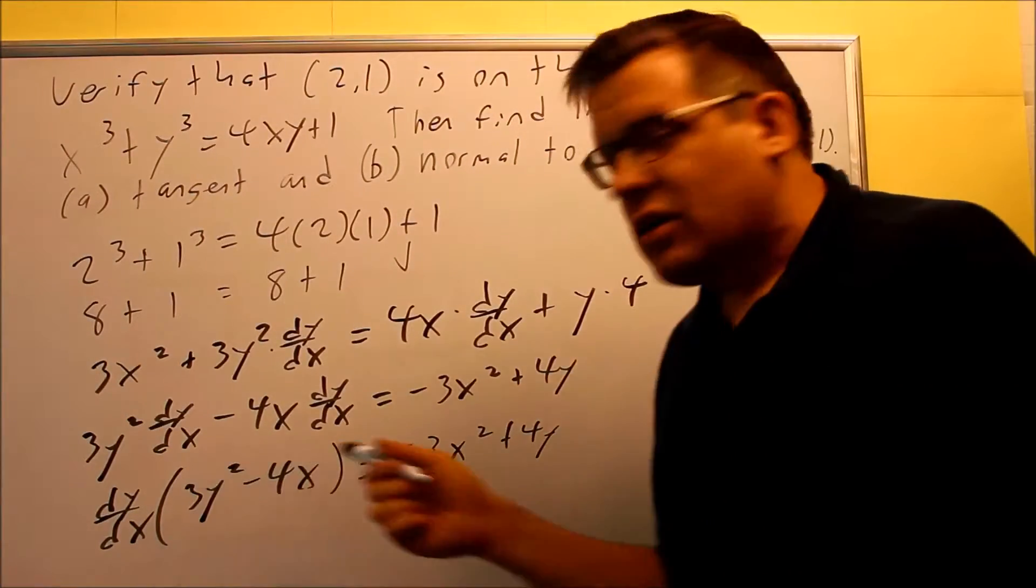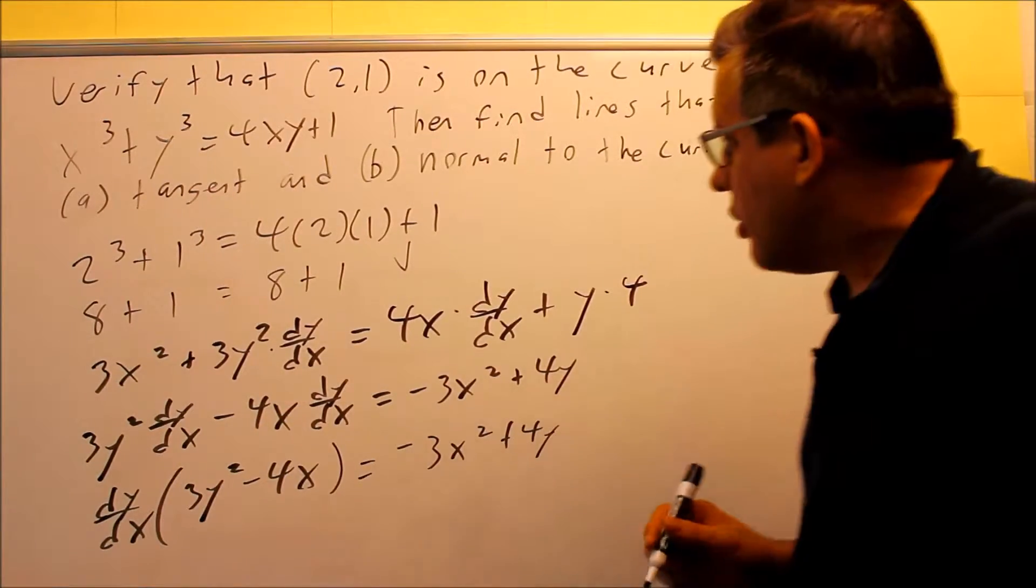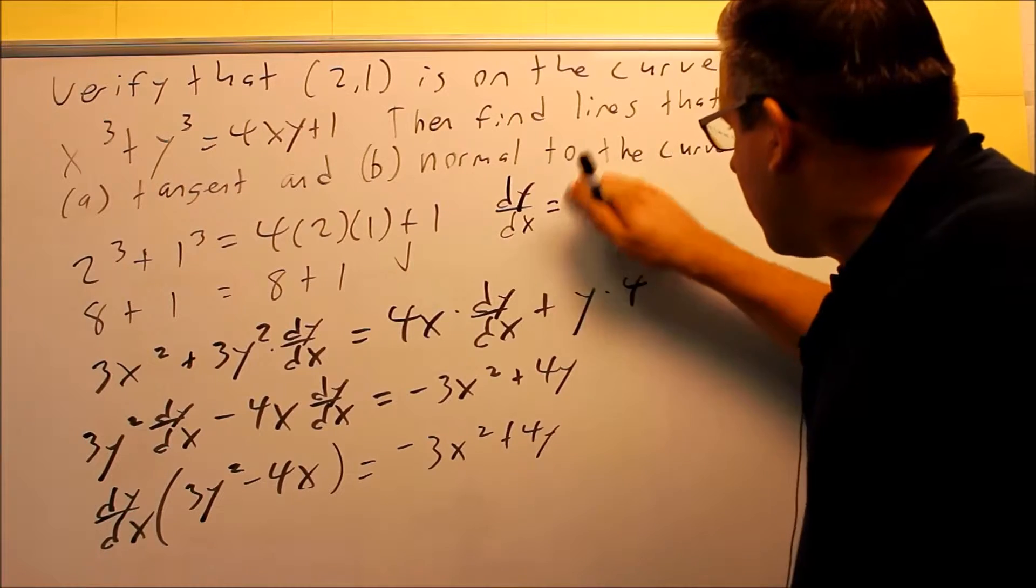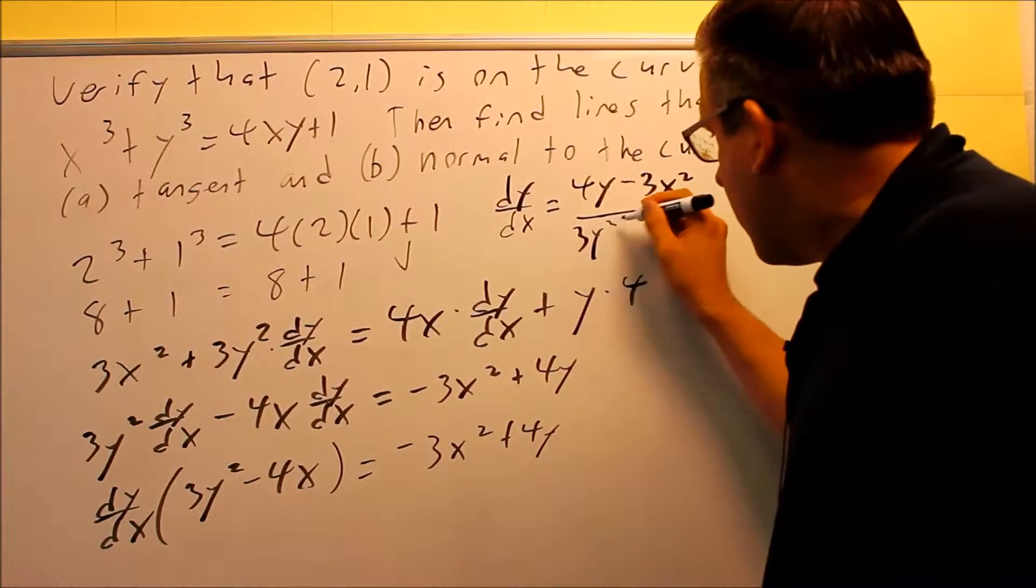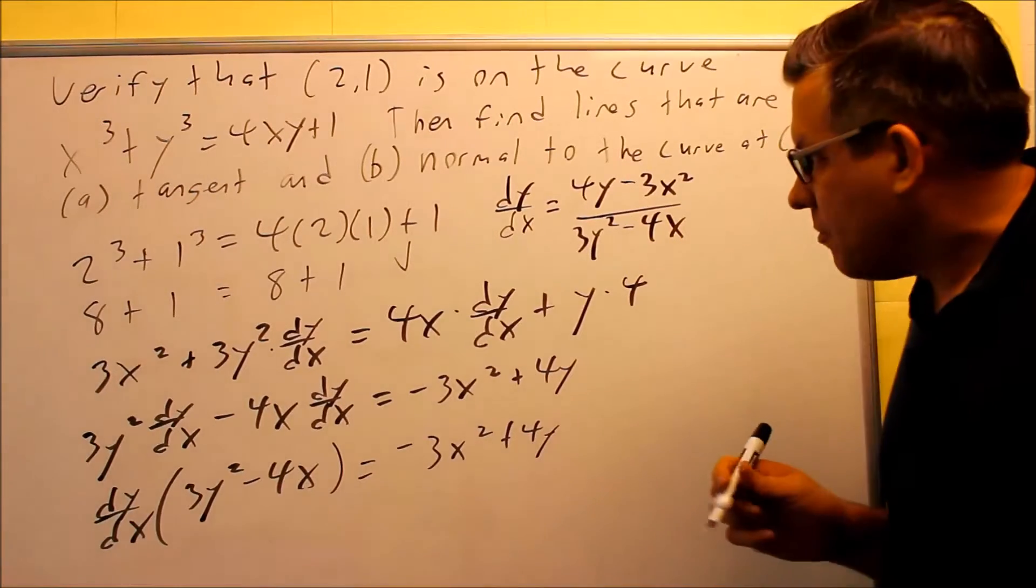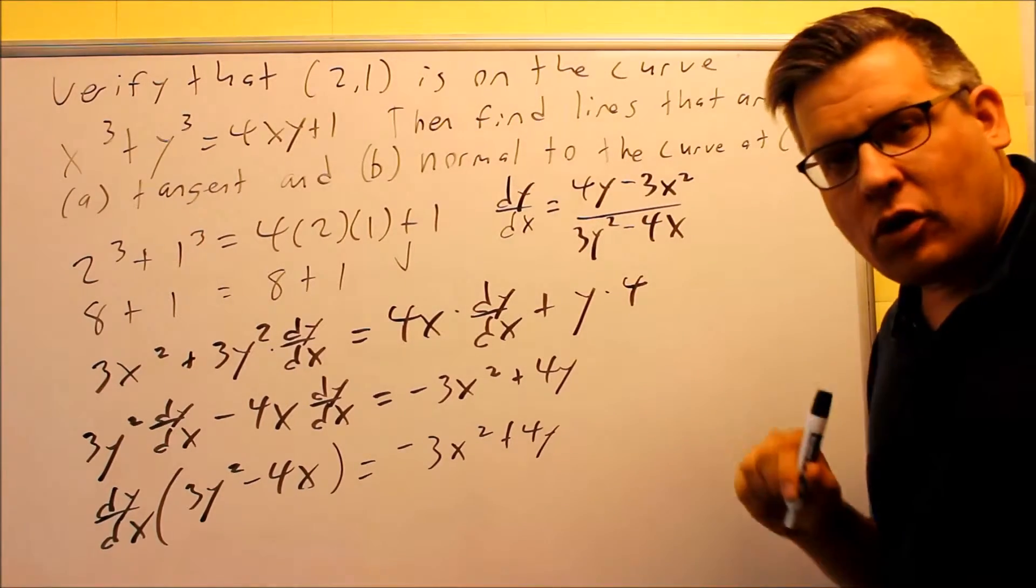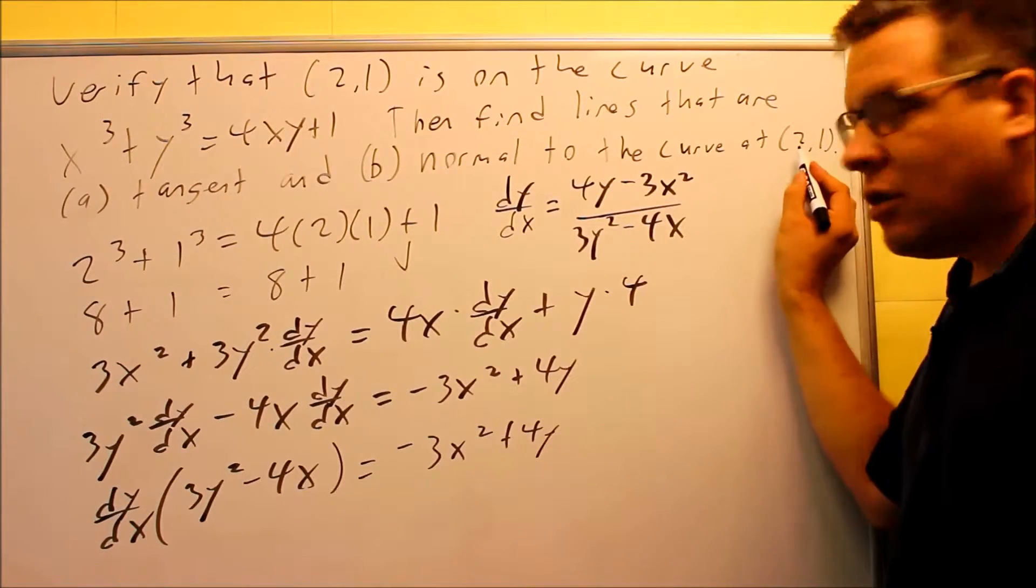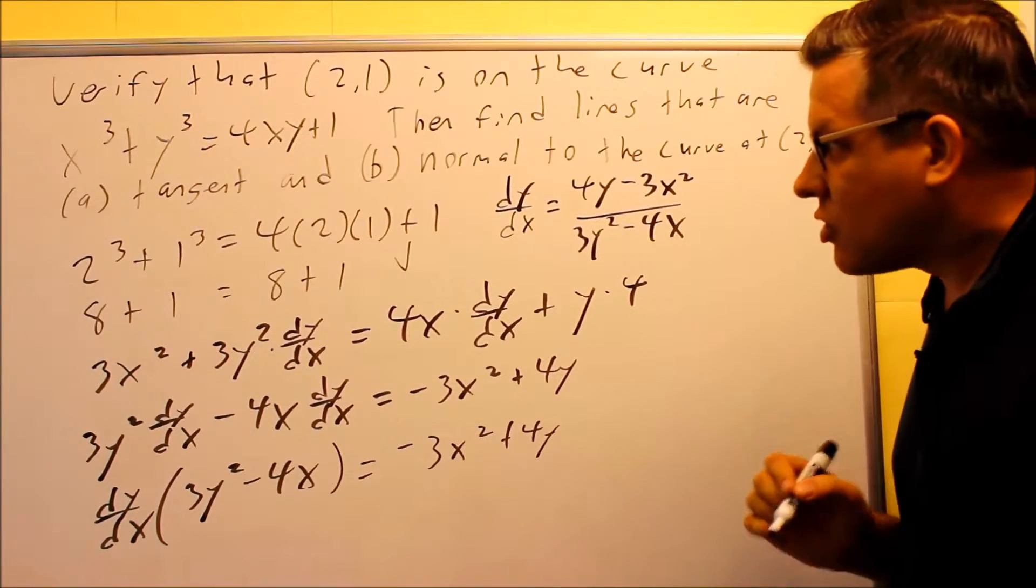Now, once we do this, we need to divide both sides by what's inside the parentheses, and we'll be able to get our derivative for dy dx. So dy dx is going to be equal to 4y minus 3x squared, and then down below I have 3y squared minus 4x. There's nothing more that we can do with that, so this is going to be our derivative. Now, in order to find the slope of a tangent, we have to have a numerical value. So we're going to use this in order to find our slope. We can do that by plugging in the 2 for x and the 1 for y. We can plug that point into here, and that's going to allow us to get a numerical value so we can find the tangent.